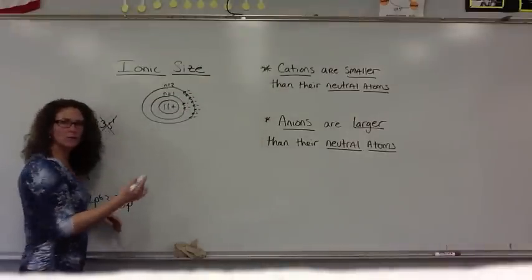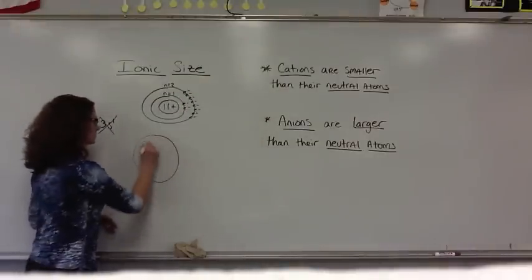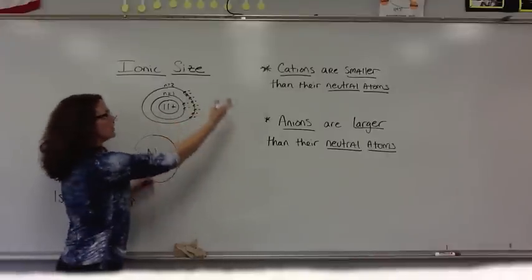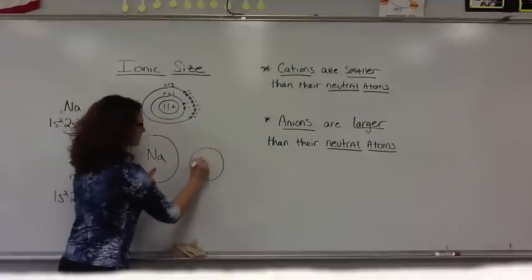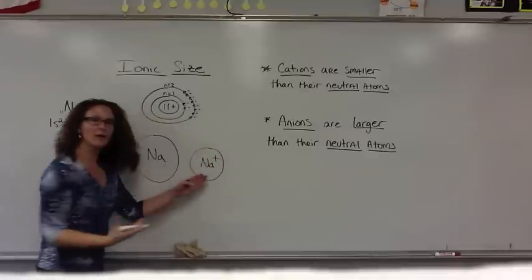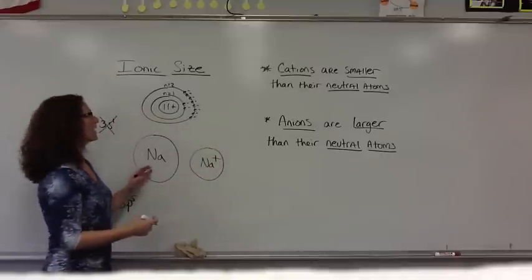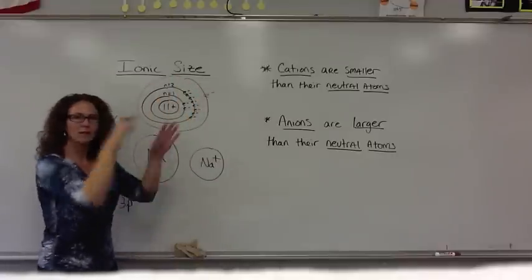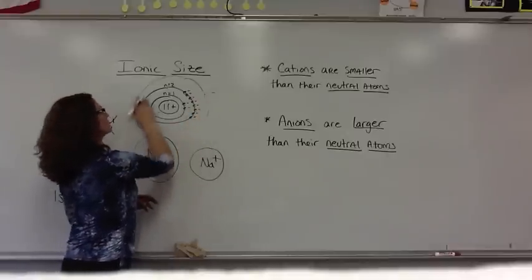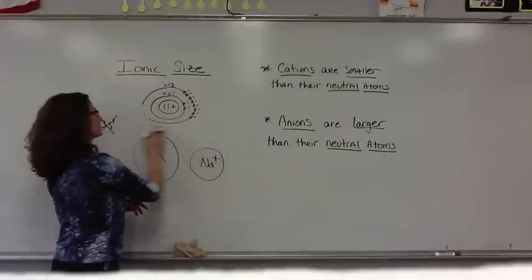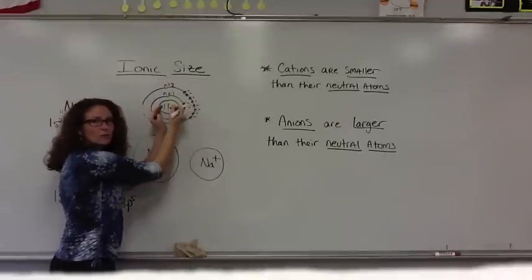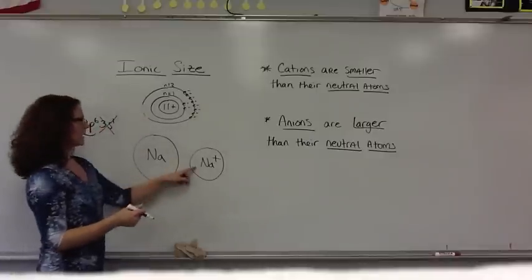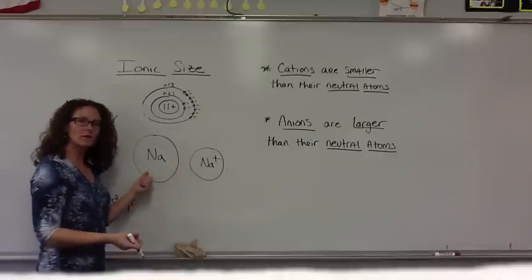Cations are actually smaller than their neutral atom's size. For instance, with sodium in the neutral atom state with that one valence electron, after the loss of that electron, the ion is now smaller than the neutral atom because that valence electron that originally was there is now completely gone, and these electrons are pulled closer into the nucleus by those positive charges that are still present. Cations are smaller than their neutral atoms.